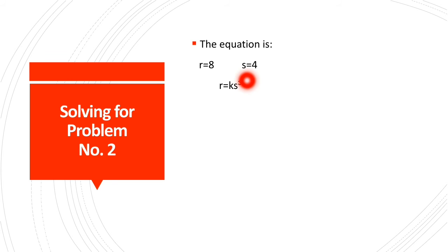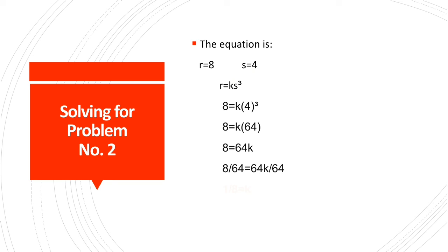Next, we get the first values and substitute them into the equation to find the value of k. The equation becomes 8 equals k times 4 cubed. We need to simplify 4 cubed: 4 cubed equals 64. So our equation is now 8 equals k times 64, which gives us 64k. We divide both sides by 64 to eliminate it. The value of k is 1/8, because it is the simplified form of 8 over 64.